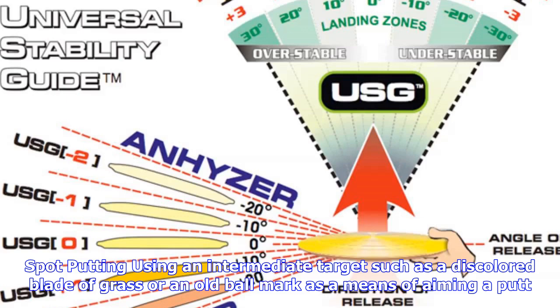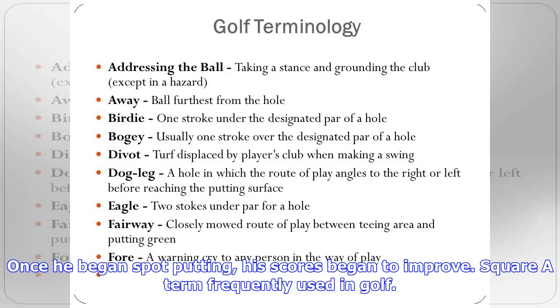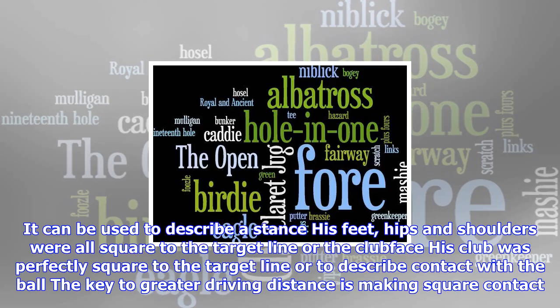Pulled hook: a shot that begins to the side of the target line and continues to curve even further away. He hit a pull hook off the 18th tee in the final round, but luckily the ball stayed inbounds.